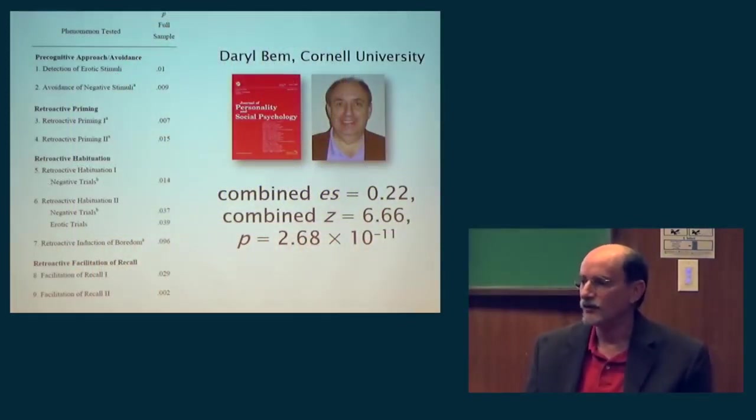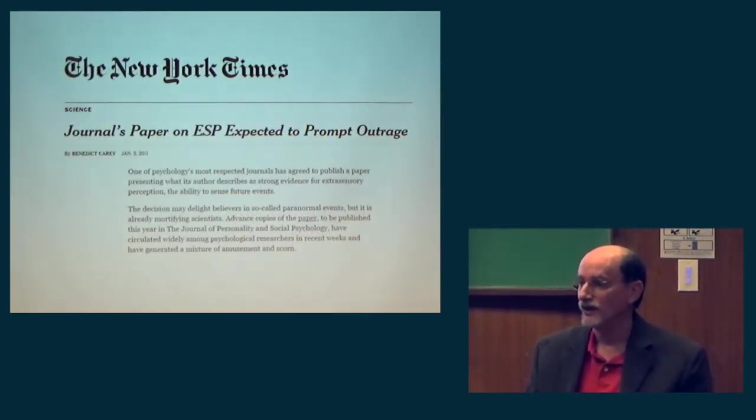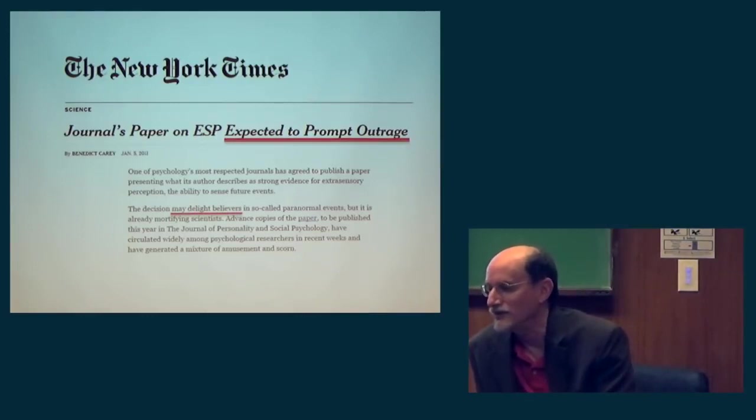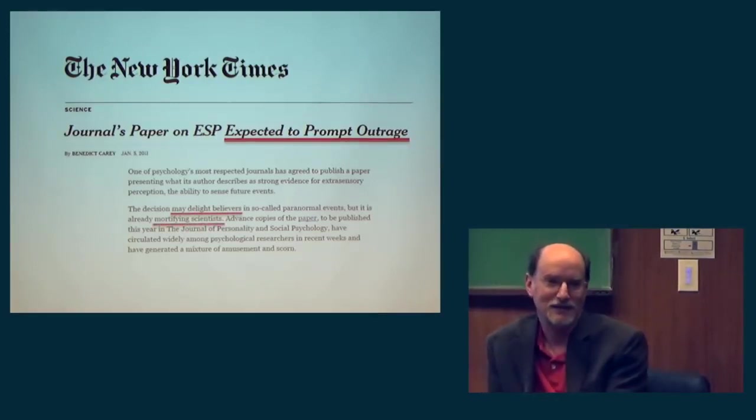There are lots of variations on this. A colleague at Cornell University named Daryl Bem did nine experiments of this type using reversed standard experiments, reversed in time. Overall got a whopping significant result, probability of 10 to the minus 11. Published it in a high tier social psychology journal, and it upset a lot of people. The New York Times felt compelled to have an editorial by their science director that the paper, which had not even been published yet, is about to be published. And you should be outraged that a journal would publish a paper on precognition. It said the decision is likely to delight believers in so-called paranormal events and that it is already mortifying scientists. Which among other things says that if you're a scientist, you cannot believe, by fiat, according to the New York Times, in anything paranormal.